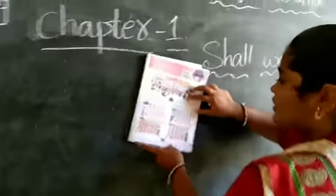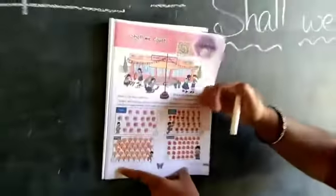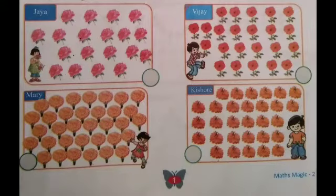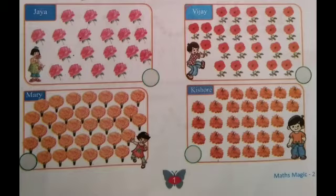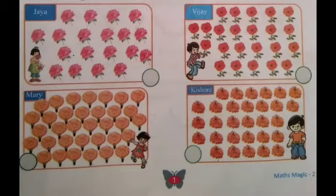All of you see. Children, look at the picture. Observe and what you find? You find flowers. Which flowers are there? Rose, marigold, hibiscus and dahlia.